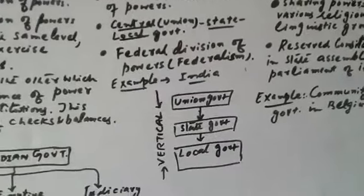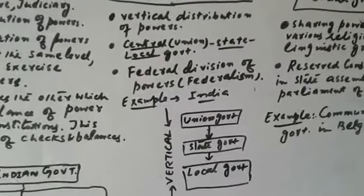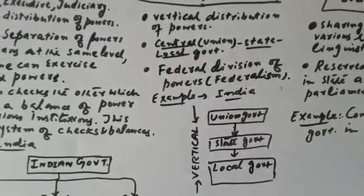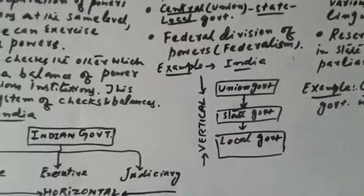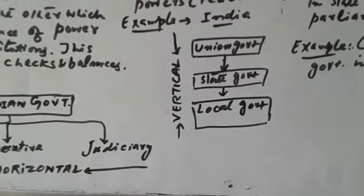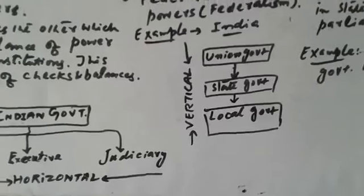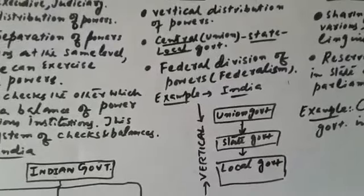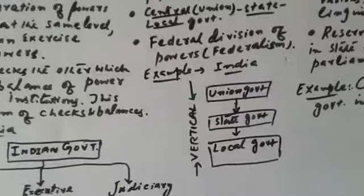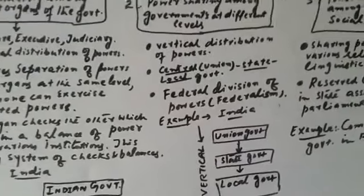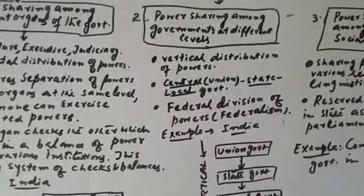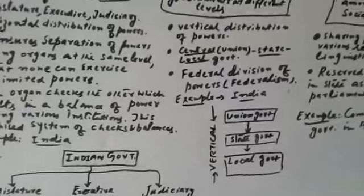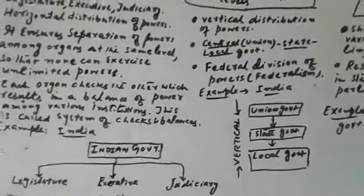In India, before 1992, there were only two levels: union and state government. But with the 73rd and 74th amendments, panchayats and municipalities were given the power of local government, making it three levels. In Belgium, there is central, state, and community government — federalism with different levels and power sharing. Sri Lanka, however, has not done this — it practices majoritarianism instead.